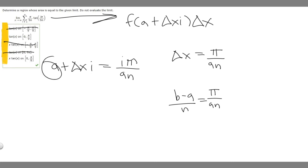If you look at a, a is 0. And so if a is 0, we're just going to have delta x, and we already know what that is. It's pi over 9n equals i.